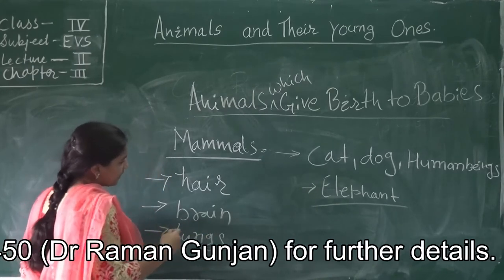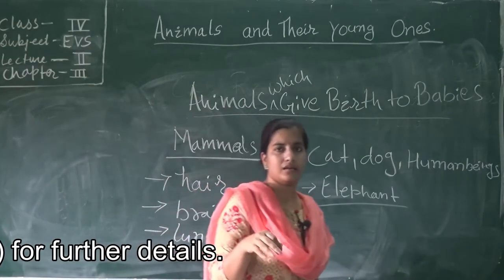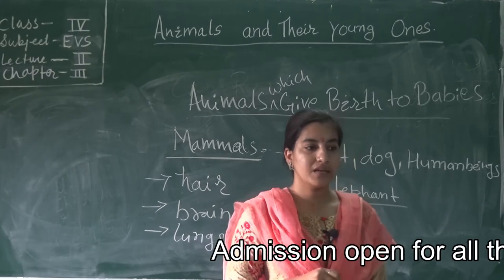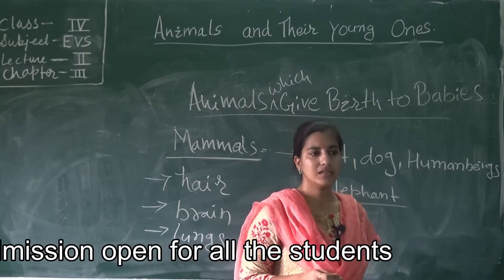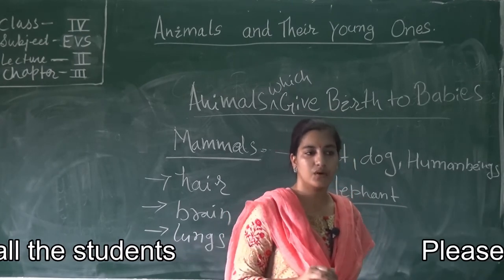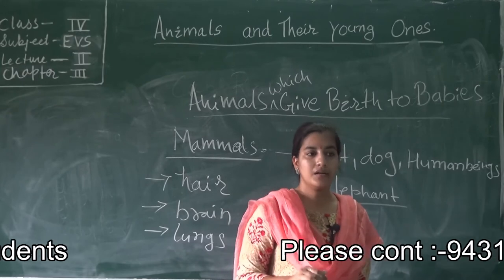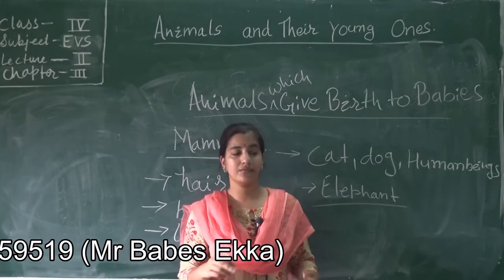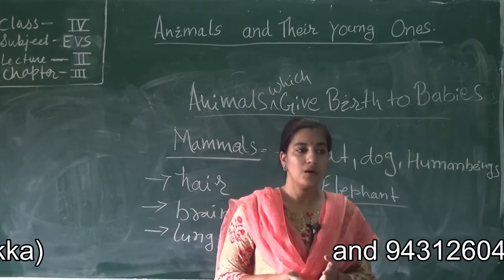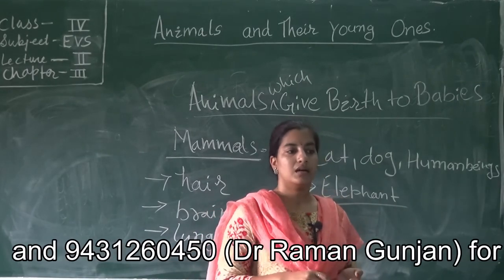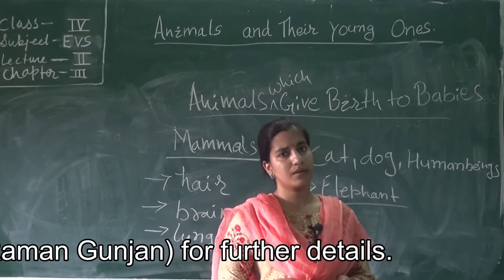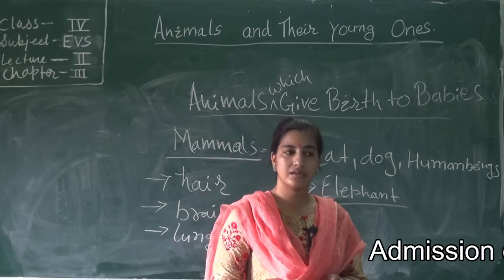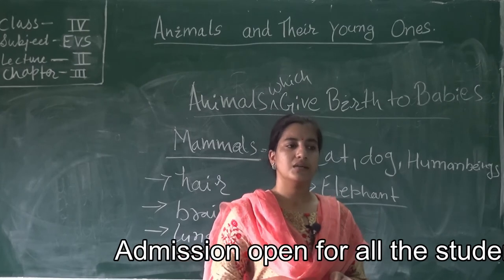All these things develop inside the mother's body only. Some mammals like whales and dolphins live in water. But most of the mammals live on land. Most mammals like human beings, cats, dogs, and elephants — all these types of animals live on land.